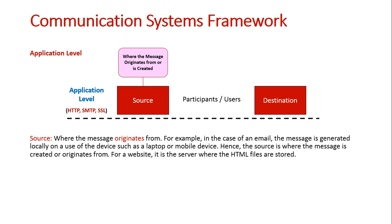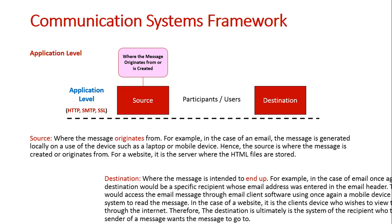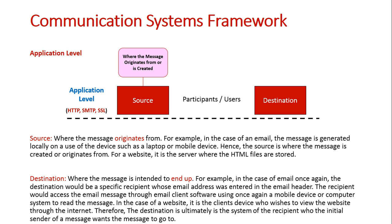Next we have the destination. The destination is where the message is intended to end up. In the case of email, it would be the specific recipient's computer — the person you're sending the email to. It is their actual mobile device or their phone. They will access it by using client email software in order to view the actual email message.